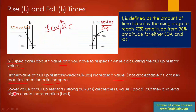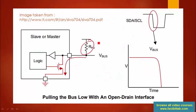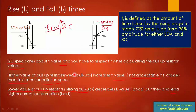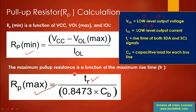Lower pull-up resistor values — strong pull-ups — decrease TR, which is good. However, they also lead to higher current consumption. If the resistance is very small, more current flows through it, which is bad for power-aware or low-power applications. That's why you must calculate the resistance value using these equations and select a value between the results obtained from solving both equations.